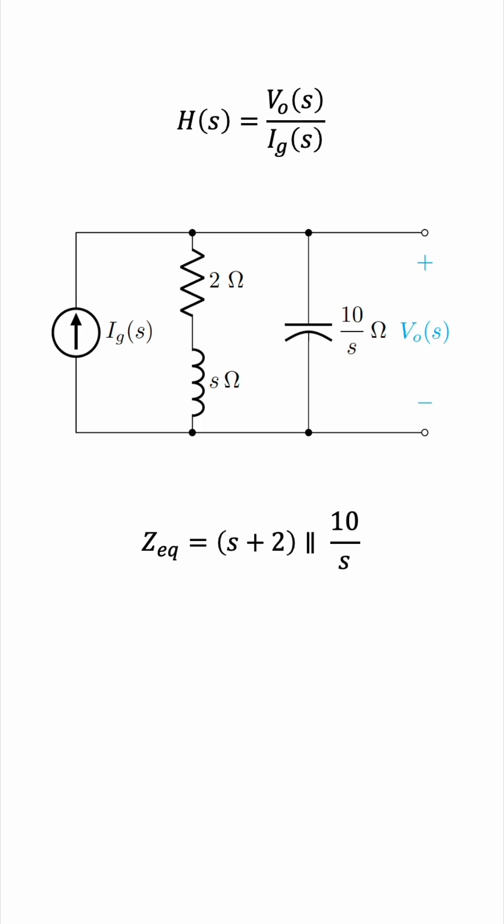and the combination is parallel with the capacitor. We have S plus 2 times 10 over S, over S plus 2 plus 10 over S. Let's multiply top and bottom by S, and this gives us 10 times the quantity S plus 2 over S squared plus 2S plus 10.